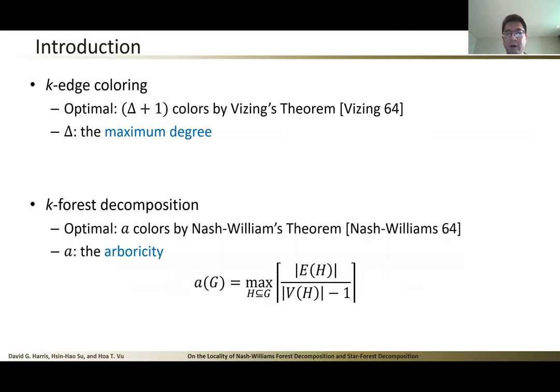For the edge coloring problem, the optimal number of colors we can get in general is Δ + 1 by Vizing's theorem. For the forest decomposition, the optimal number of colors we can get is a, where a is arboricity. This follows by a classic result of Nash-Williams.